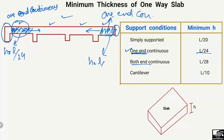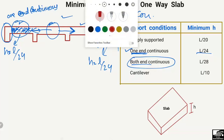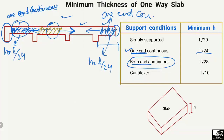Similarly, the thickness for another one-end continuous slab is also L/24, where L is the length of the slab. Both-ends continuous means both ends of the slab are continuous. Looking at this slab, it is continuous in this direction and also continuous in the other direction with no discontinuity — so it is regarded as a both-ends continuous slab. Similarly, another slab continuous at both ends also qualifies, and for a both-ends continuous slab the thickness is L/28.